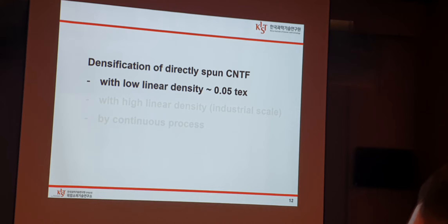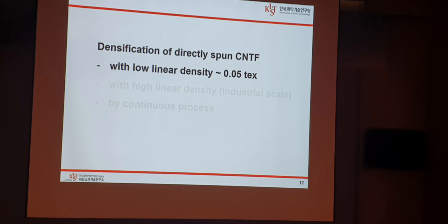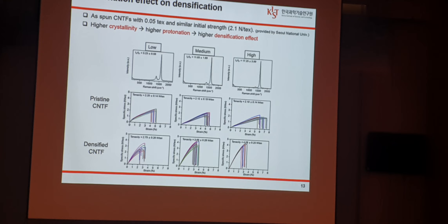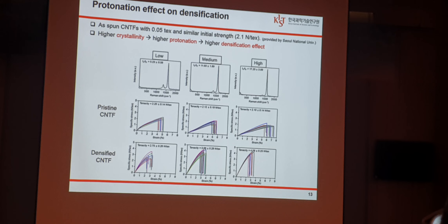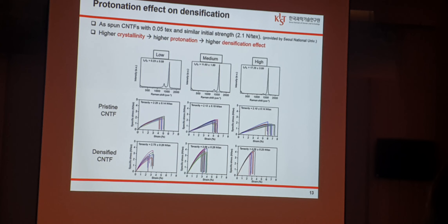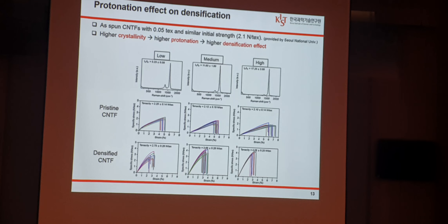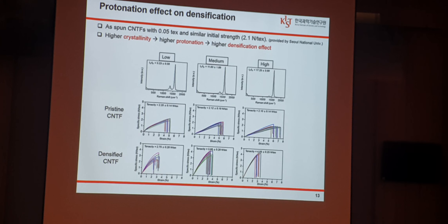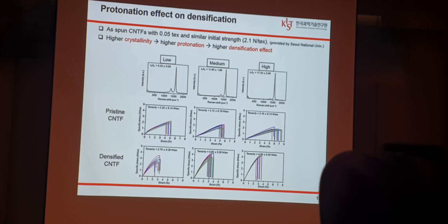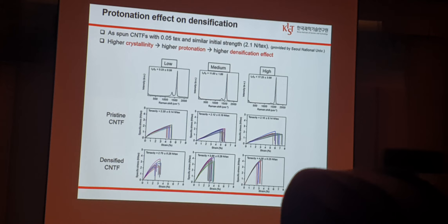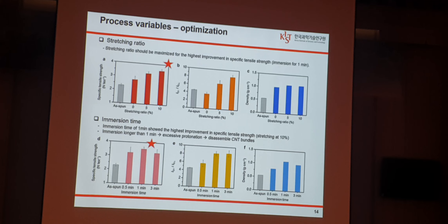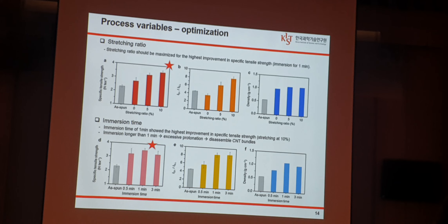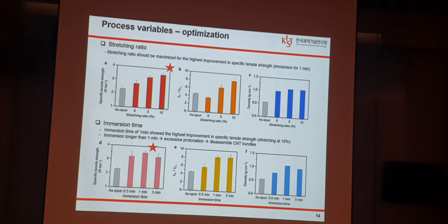Let me show the results of densification of directly spun CNT fiber with low linear density. We investigated the protonation effect on the final property of the fiber. This was done by preparing three kinds of CNT fiber with initially similar linear density around 0.05 tex and specific strength, but different crystallinity — since protonation is largely affected by crystallinity. We selected the sample with the highest crystallinity and investigated process variables such as stretching ratio and immersion time in CSA.